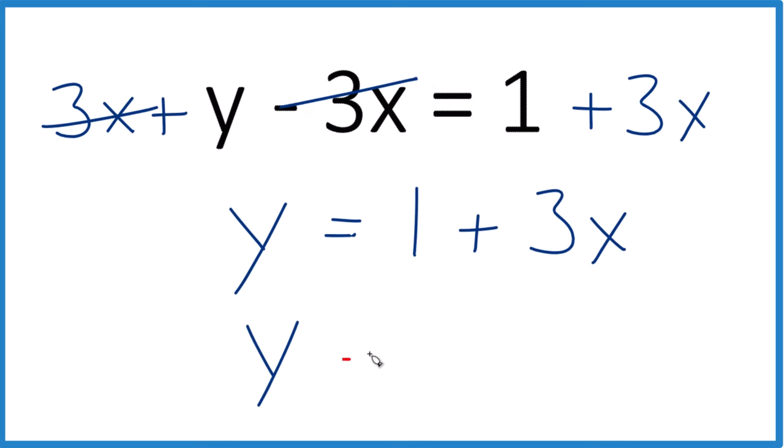Often we'd write this as y equals 3x plus 1, because that's slope-intercept form. If you wanted to graph this, it'd be a lot easier to graph it this way. If you need to graph it, y equals 3x plus 1, there's a link at the end of this video.